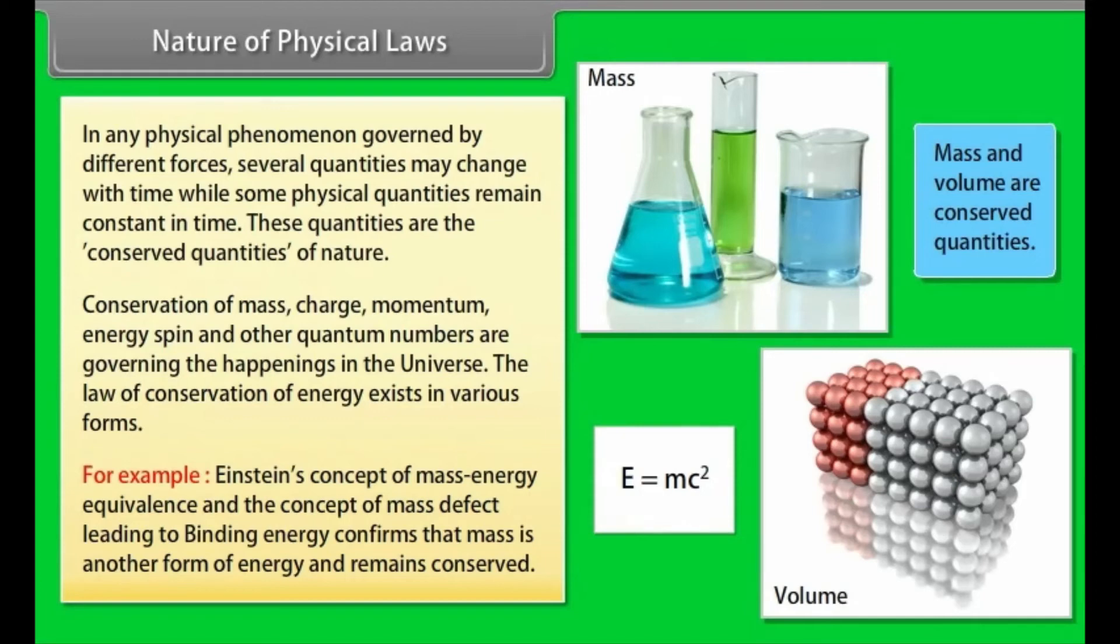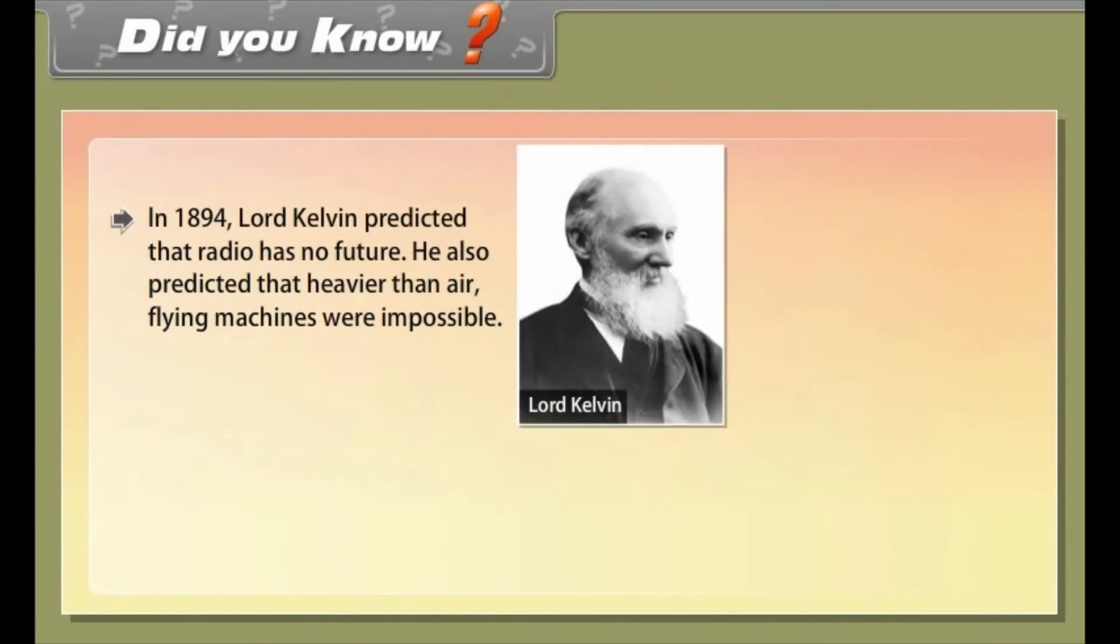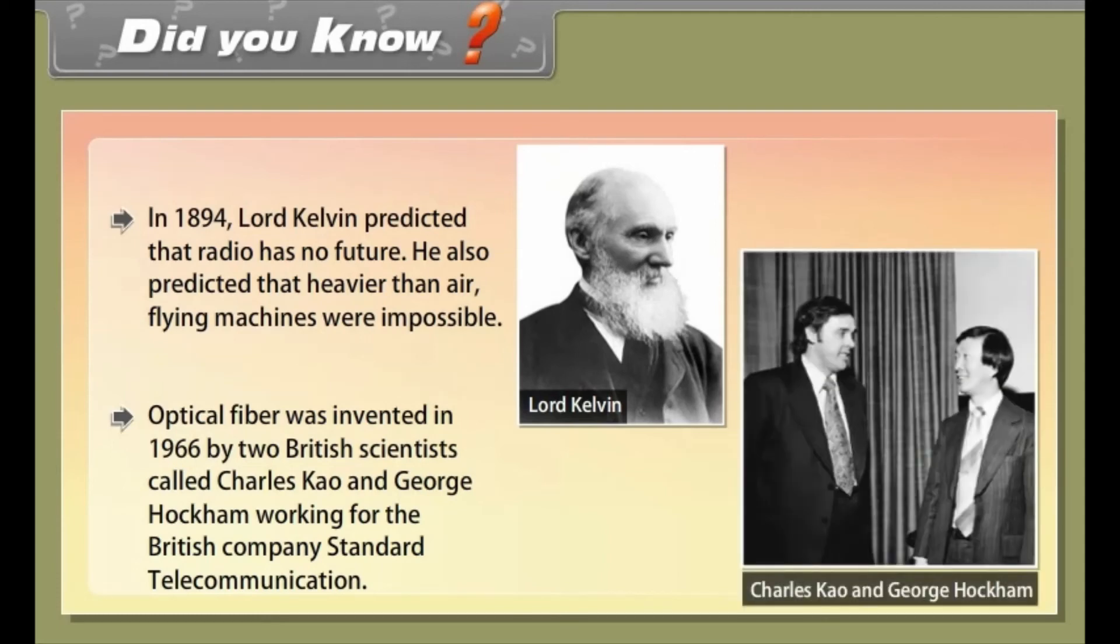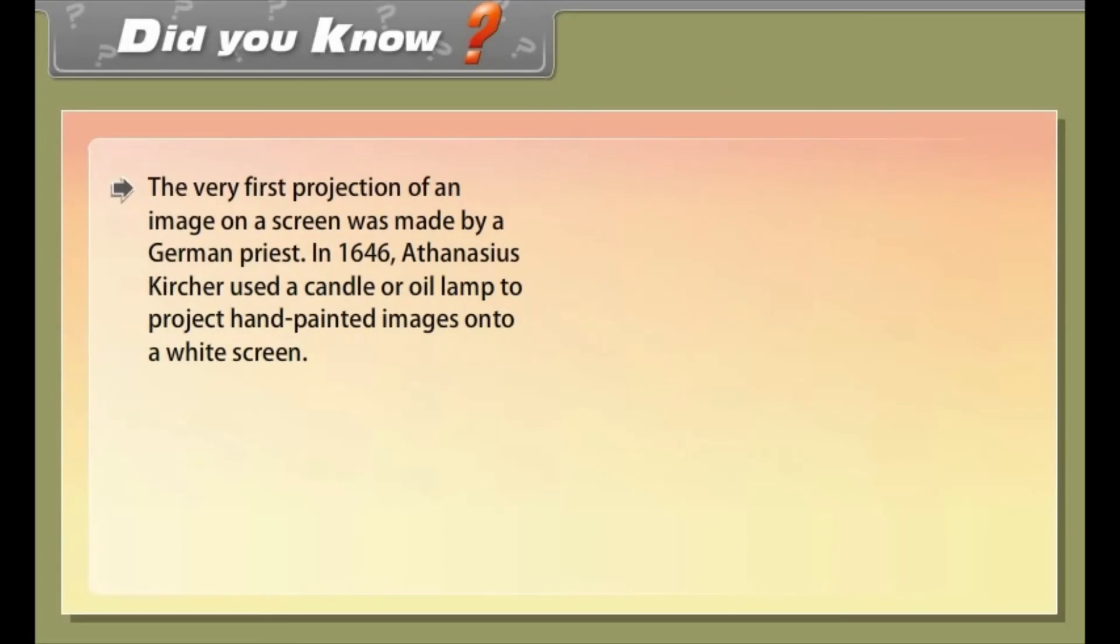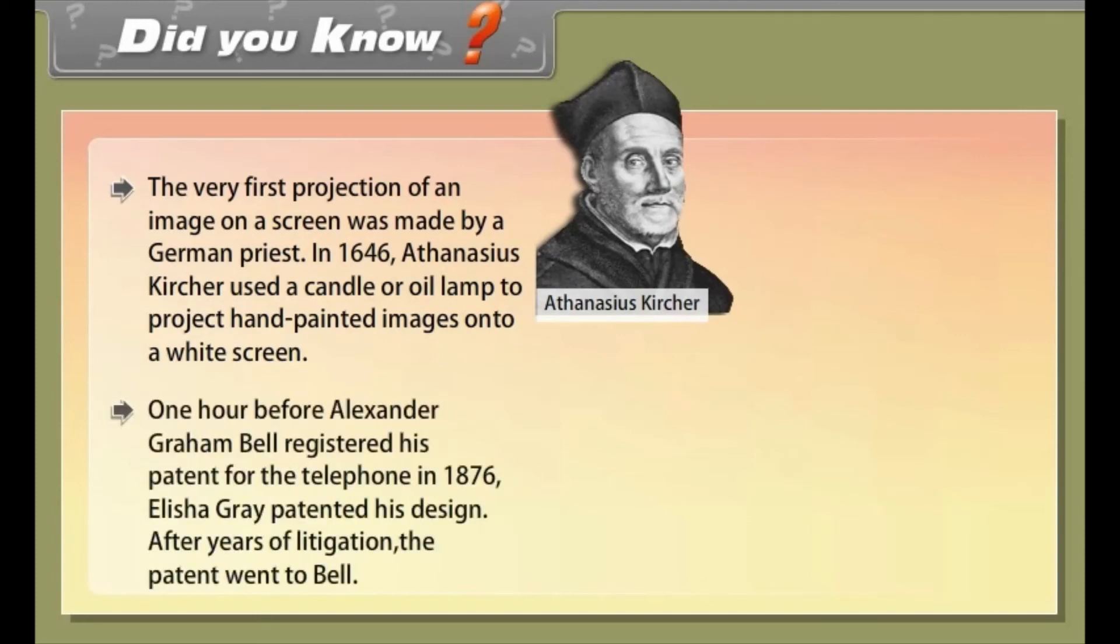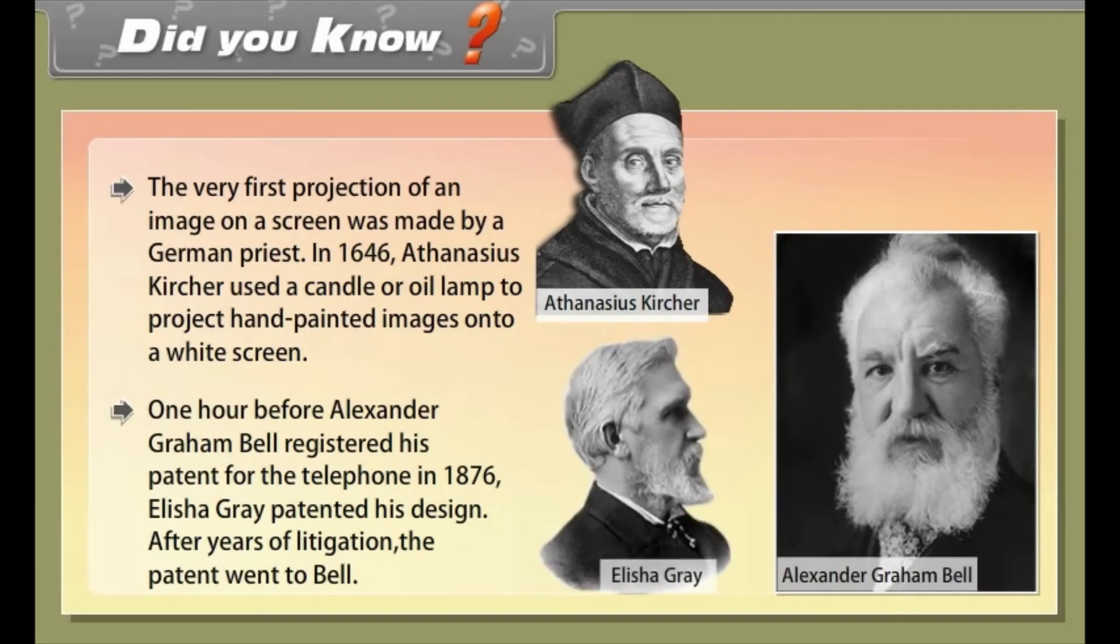Did you know? In 1894, Lord Kelvin predicted that radio has no future. He also predicted that heavier-than-air flying machines were impossible. Optical fiber was invented in 1966 by two British scientists called Charles Cow and George Hockham working for the British company Standard Telecommunications. The very first projection of an image on a screen was made by a German priest in 1646. Athanasius Krischer used a candle or oil lamp to project hand-painted images onto a white screen. One hour before Alexander Graham Bell registered his patent for the telephone in 1876, Alicia Gray patented his design. After years of litigation, the patent went to Bell.